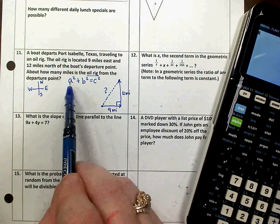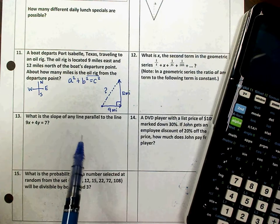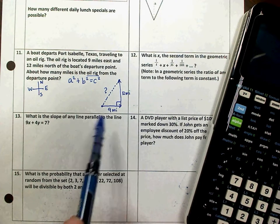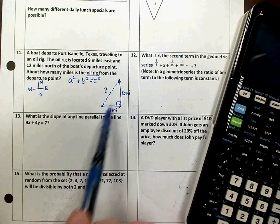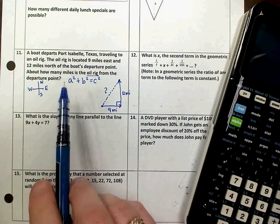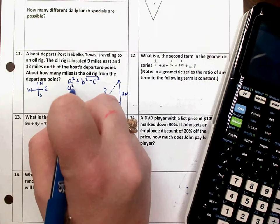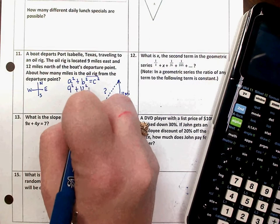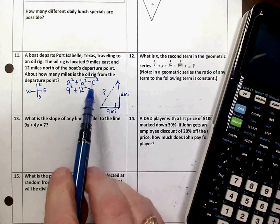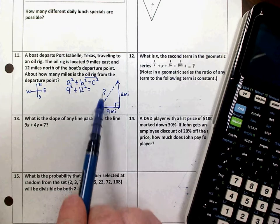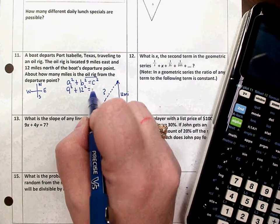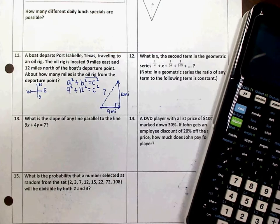In this formula, the A and the B values come from the two sides that make up the right angle, and those two sides are 9 and 12. It doesn't matter which one you put in for A and which one you put in for B, but don't forget to square them before adding them. The C value is always the side across from the right angle, which is called the hypotenuse. That's the one we're trying to find, so I'm going to keep that as C squared.